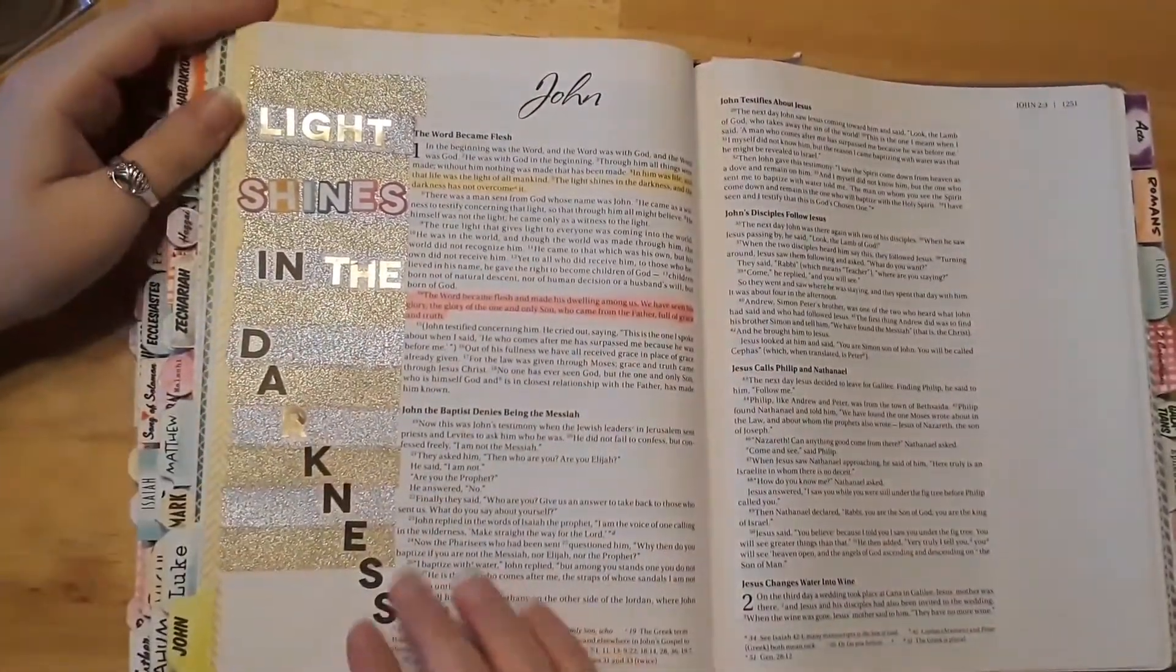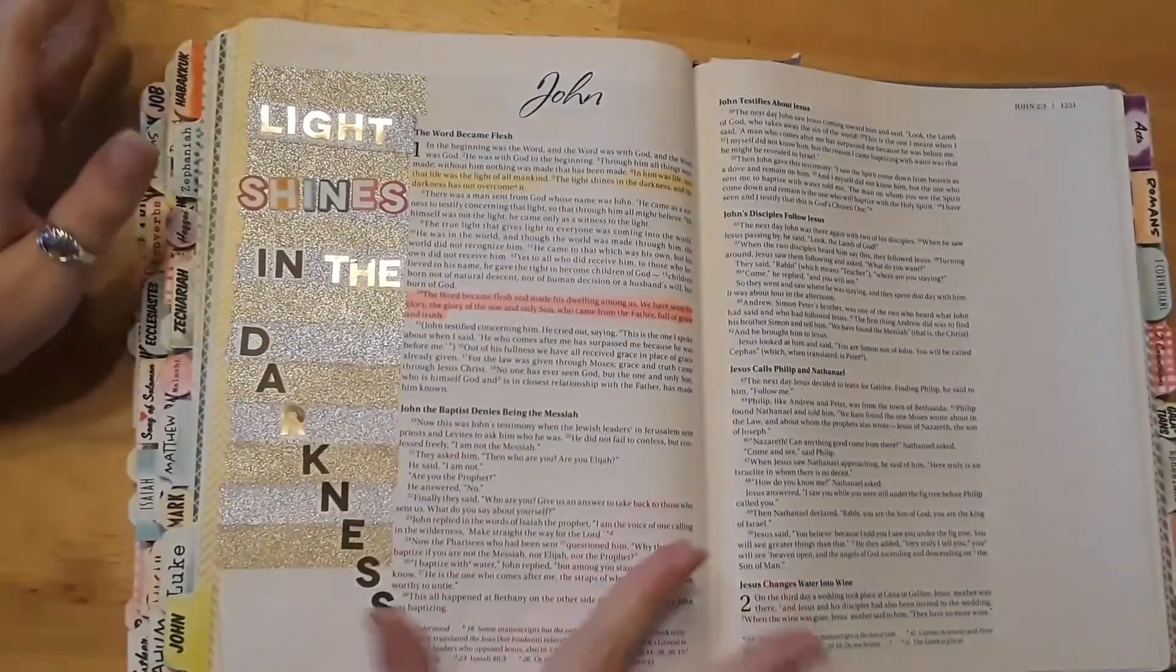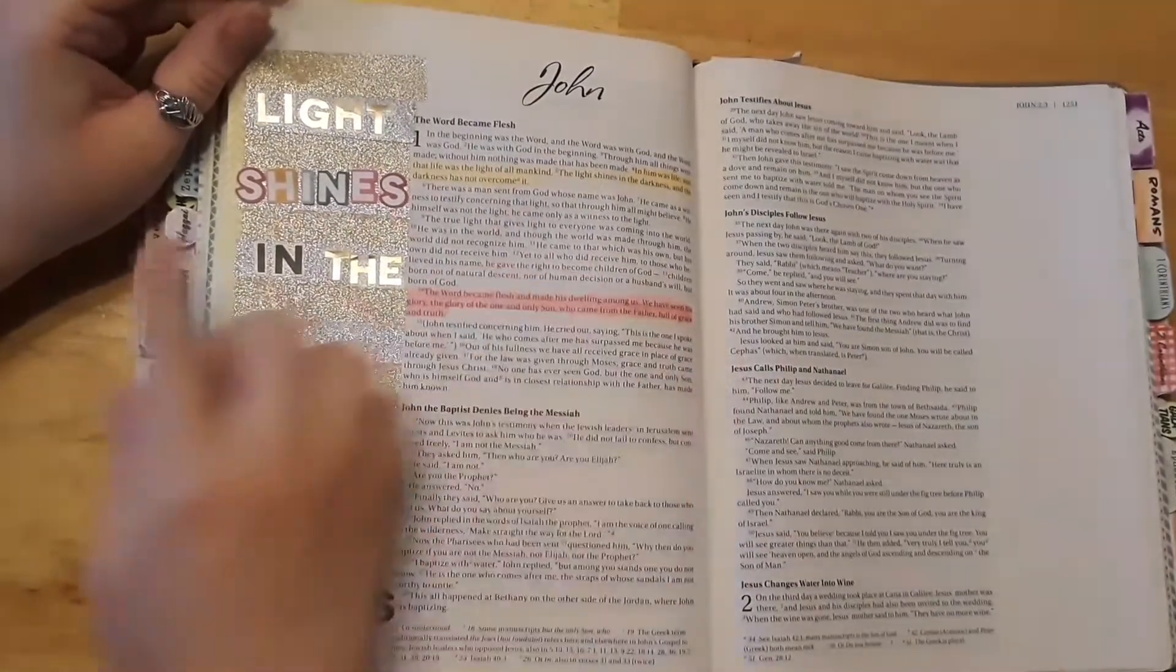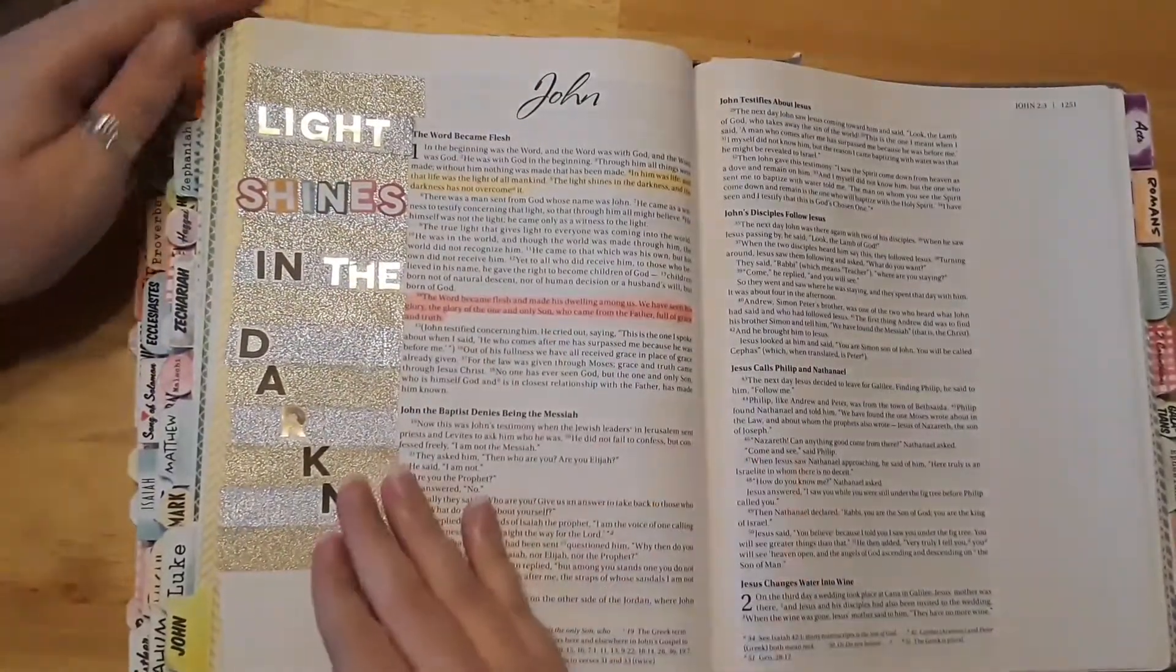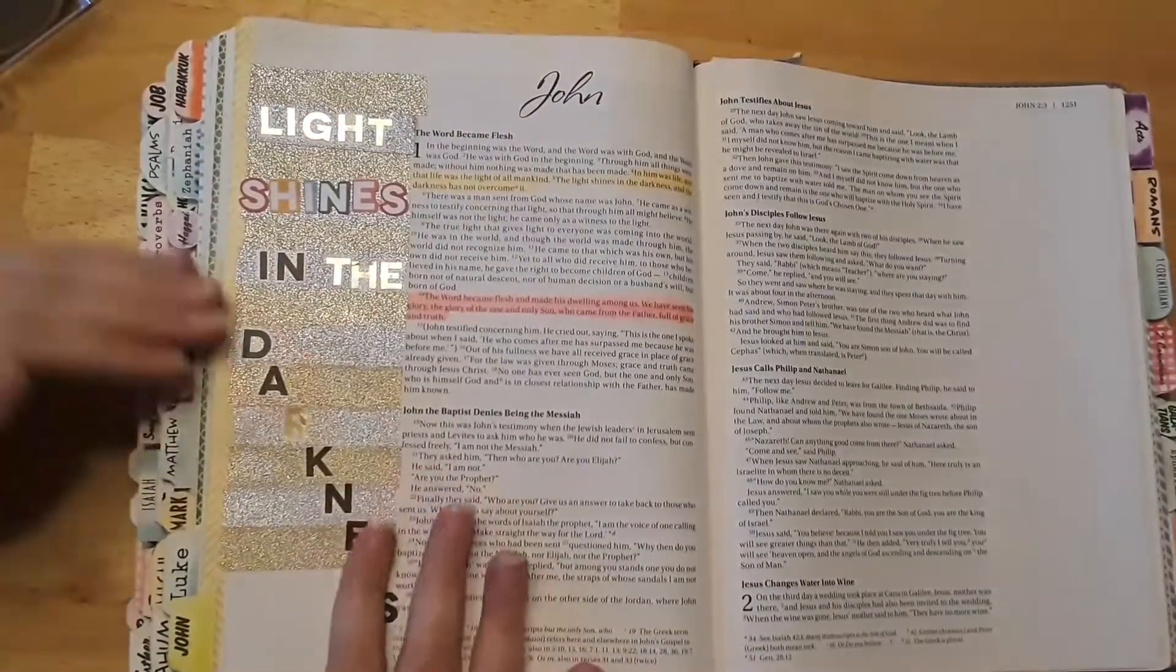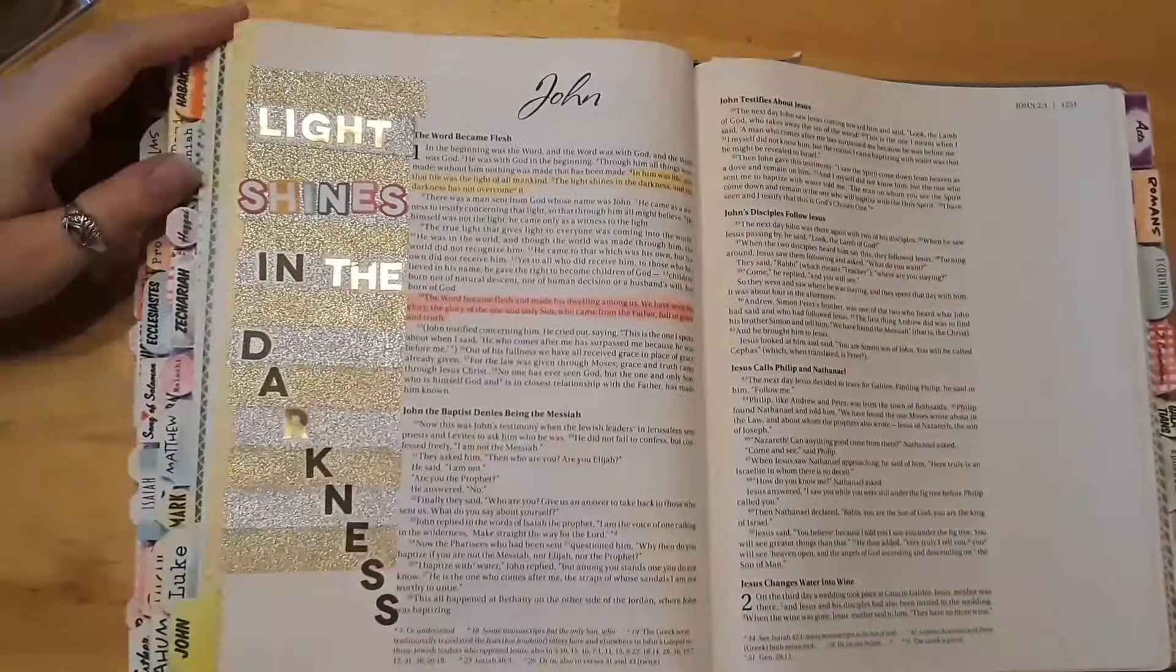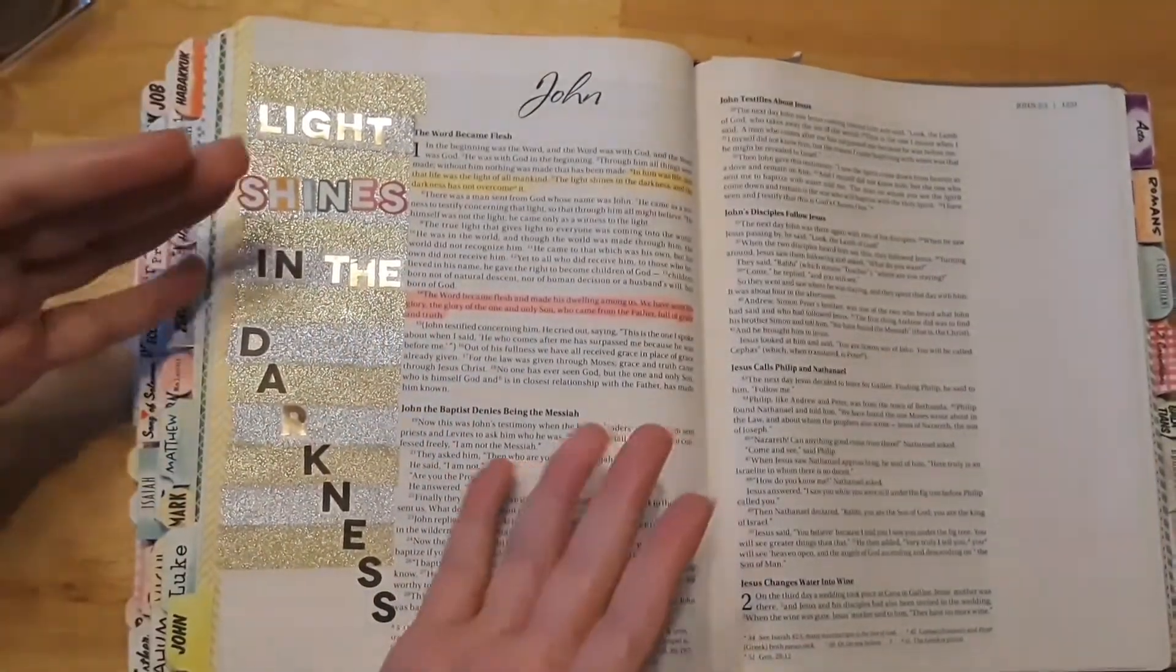All right, so I wasn't sure if the mixed stickers would work, but goes to show you if you have mismatched stickers, it still works. Because I like how 'light' is on gold—it makes it shiny and bright. And 'shines,' it just makes it fun, and God is fun. God shines through everything, so it kind of stands out from everything else. And then I didn't have an R in the black, but it kind of works because if you think about it, when light shines...